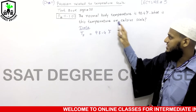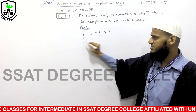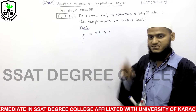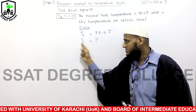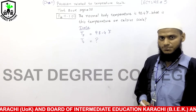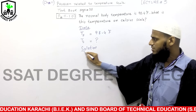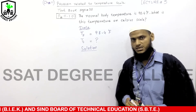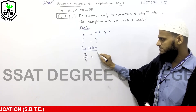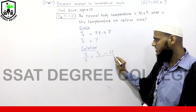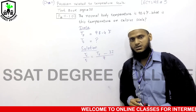We need to find the temperature in Celsius. Our data is now complete. For the solution, the formula we are going to use is: TC divided by 5 equals TF minus 32 divided by 9.